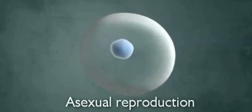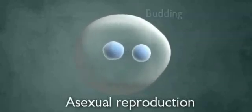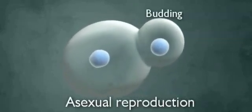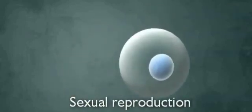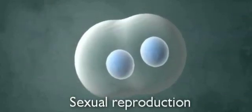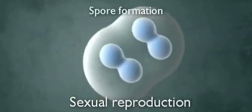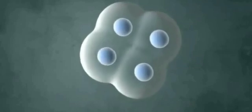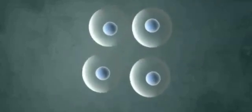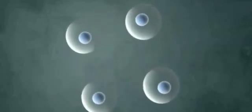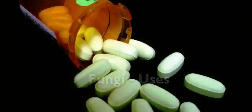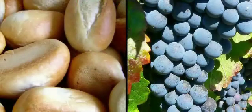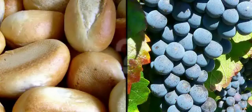Asexual reproduction in fungi involves a single cell budding and separating into two cells. Sexual reproduction in fungi involves two cells fusing, which form spores by meiosis. Fungi can produce poisons that attack cells. Fungi are used to make antibiotics, bread, wine, and beer.